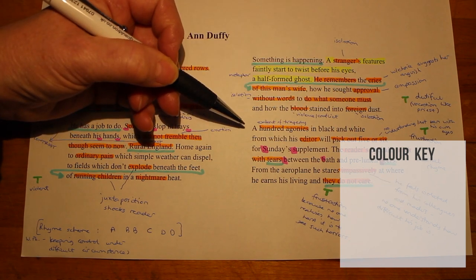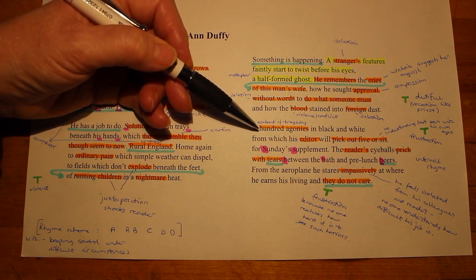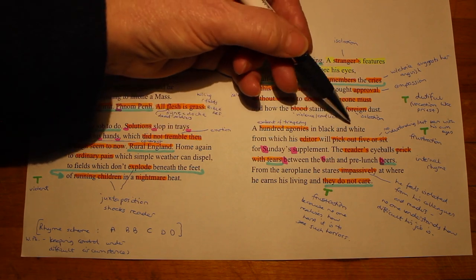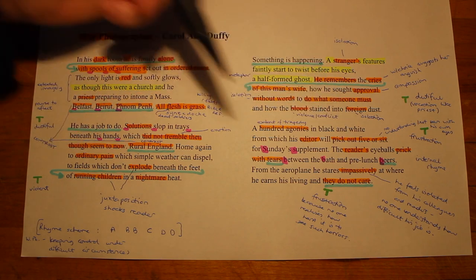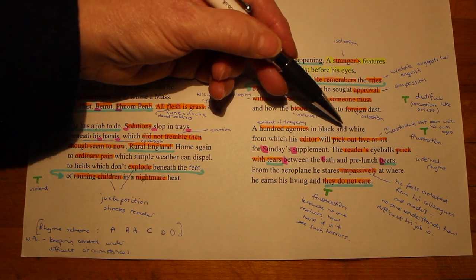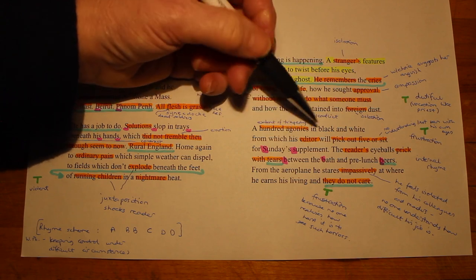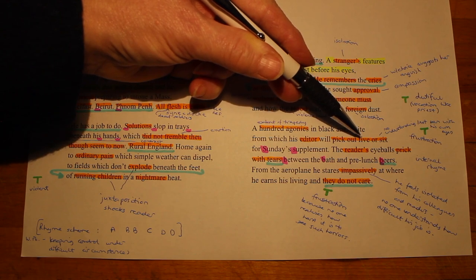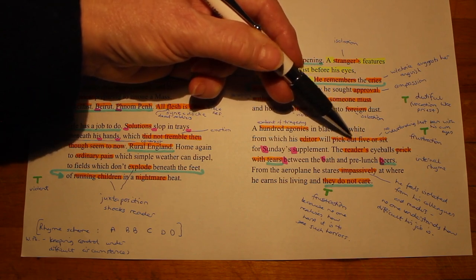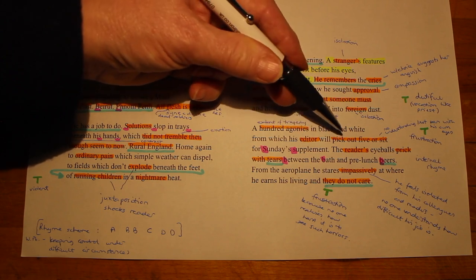Moving on to the last stanza, the reference to 'a hundred agonies' reminds us of the extent of the tragedies this man witnesses on a daily basis in a war zone. They're in black and white because, at the time Duffy wrote this poem — about a friend of hers who was a war photographer — newspaper photographs appeared in black and white. His editor, out of these hundreds, will only pick out five or six, and somehow the photographer feels this is not enough, that the editor doesn't understand what he's been through.